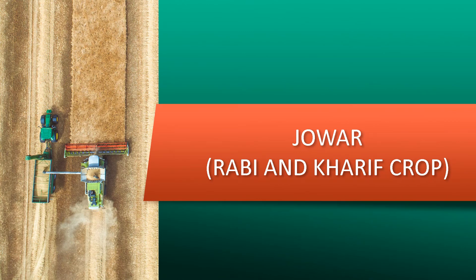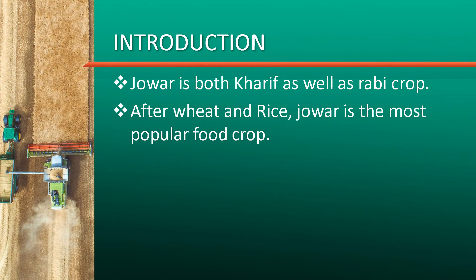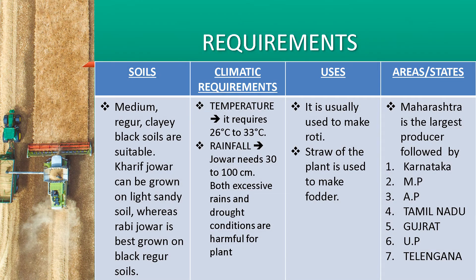What is Jwar? Jwar is the most popular food crop among millets. The average amount of rainfall required is 20 to 100 cm, or 50 to 120 cm. Jwar is grown in dryland farming areas where irrigation is not needed. Excessive rain or drought conditions are both harmful for this crop.